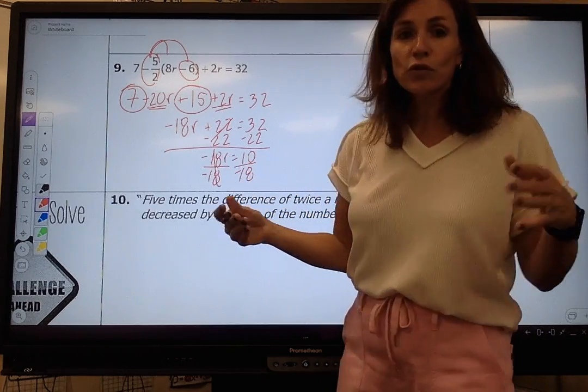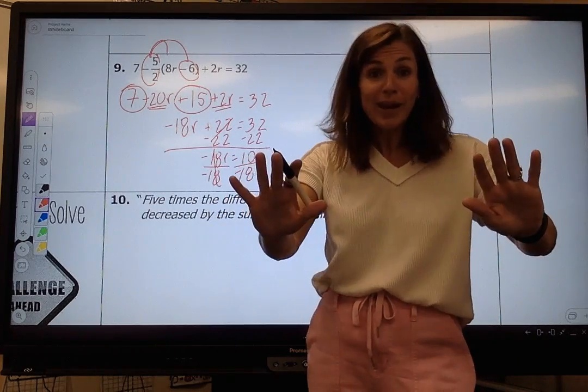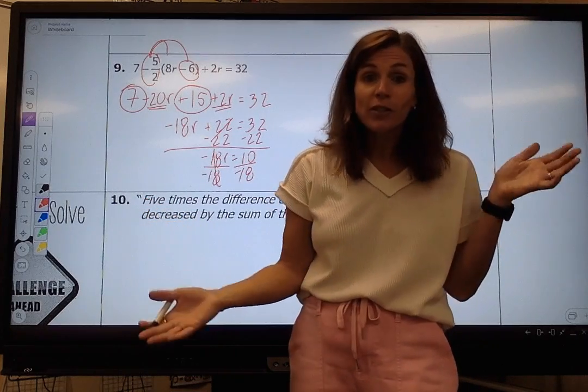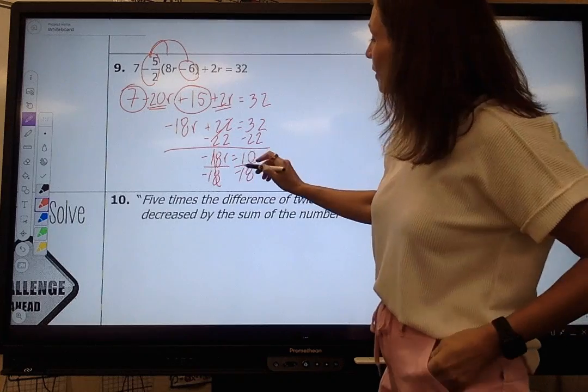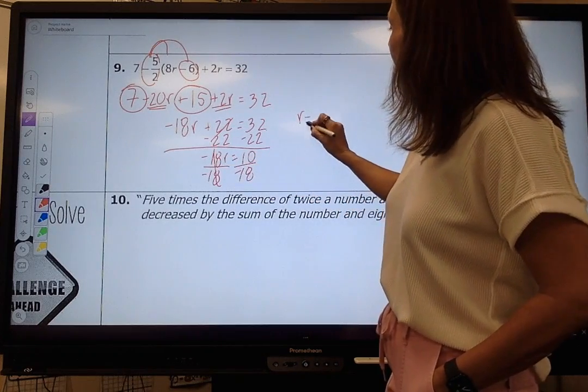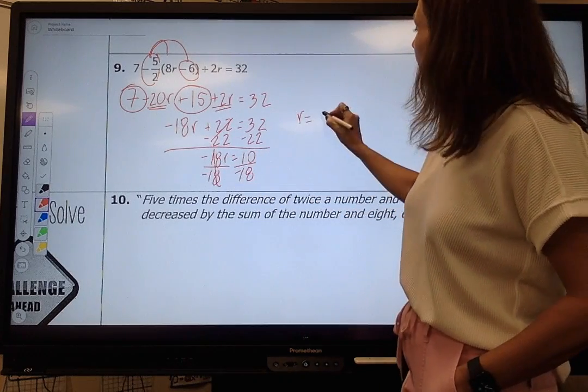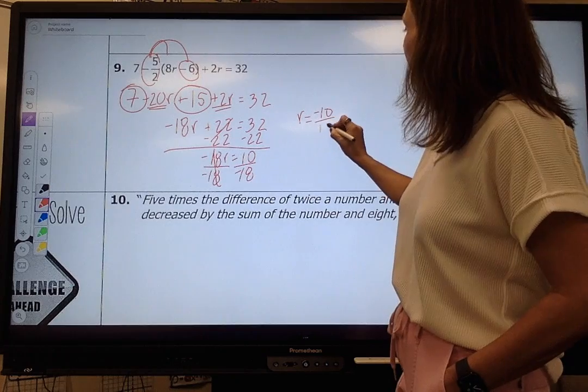And then this is where students are like, but I got a fraction. I got a fraction. It's okay. We live in a fractional world. You're going to see fractions all day long. It is absolutely fine to get a fraction. But make sure you give it how I need it. Ten over negative 18 is negative 10 eighteenths.